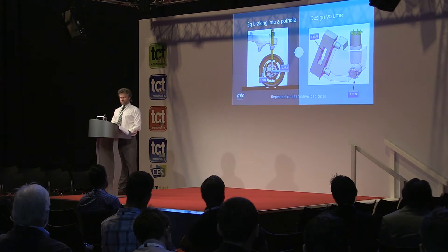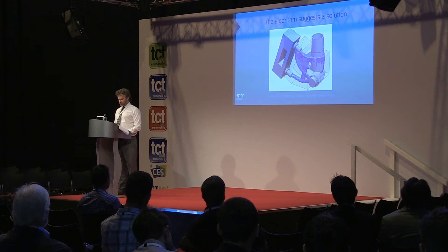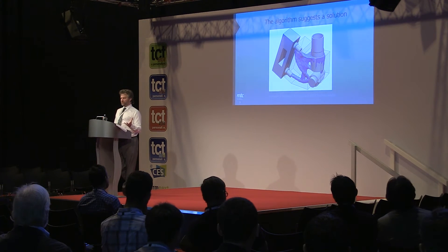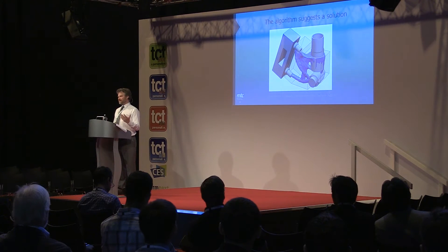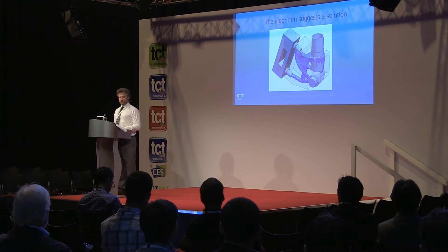The algorithm produces a blobby form indicating where material needs to be placed within the volume to transfer the load — generally joining areas where loads enter. Depending on the material used, the form changes: the stiffer and stronger the material, the less material is needed. So in parallel with defining boundary conditions and design volume, the material must also be specified to get the right amount of material.